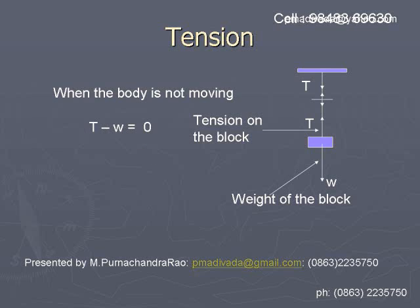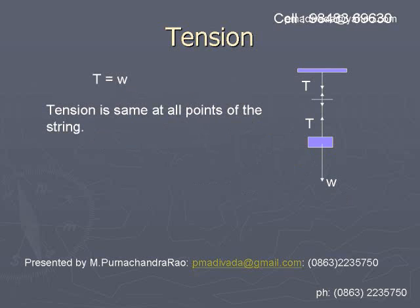So, T minus W is equal to zero. If you take the upward direction as positive, then T minus W equals zero. Therefore, T is equal to W.